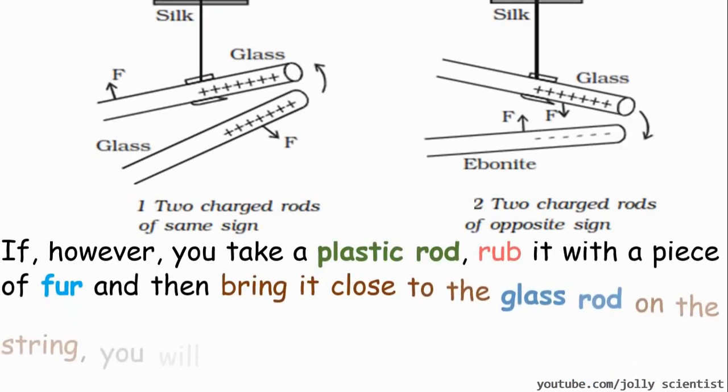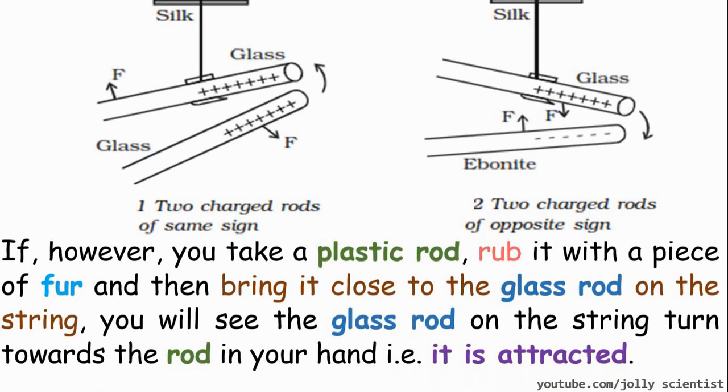If, however, you take a plastic rod, rub it with a piece of fur and then bring it close to the glass rod on the string, you will see that the glass rod on the string turns towards the rod in your hand. That is, it is attracted.